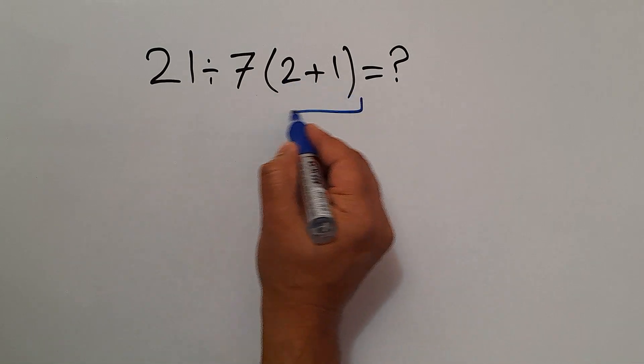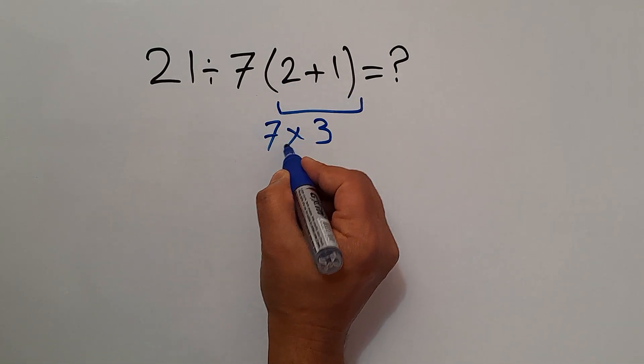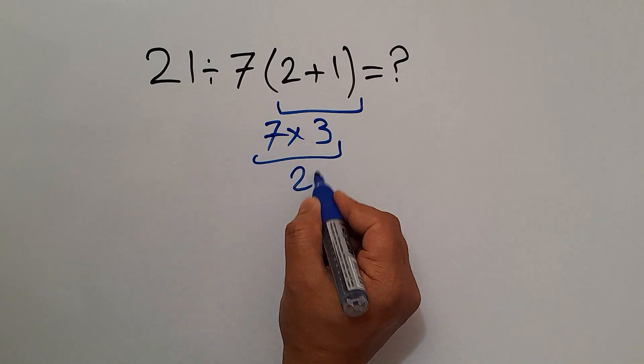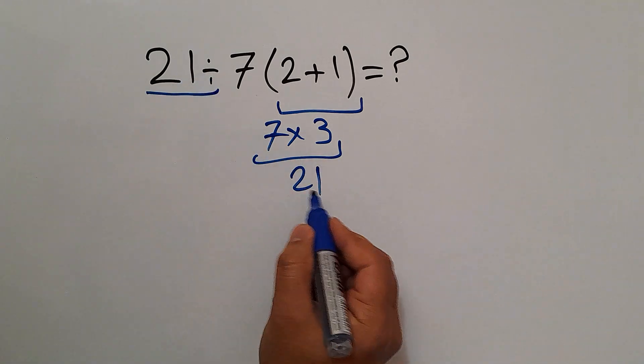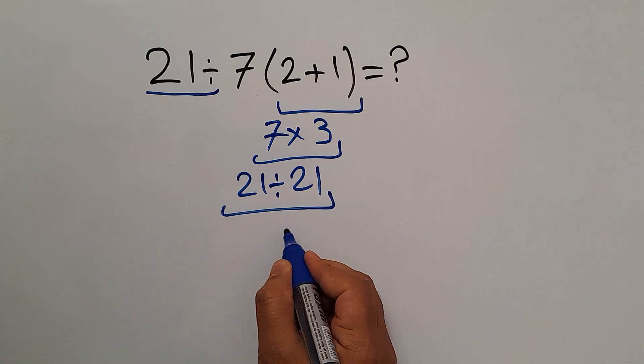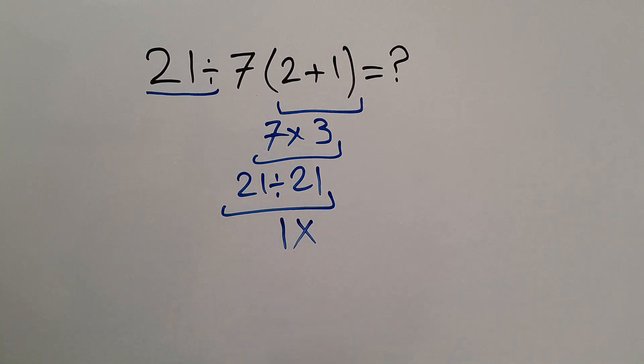2 plus 1 equals 3, so 7 times 3 equals 21, and we have here 21 divided by 21 which equals just 1. But this answer is not correct.